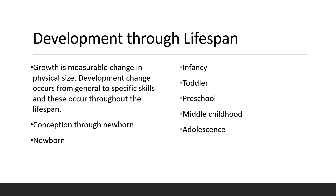Maturation is the physical, intellectual, or emotional process of development. When we consider conception through newborn, conception occurs when the sperm penetrates and fertilizes a female egg. The nuclei of the two combine in a single cell with 23 chromosomes, and all the inherited characteristics are predetermined.